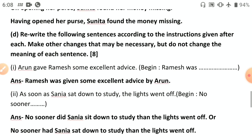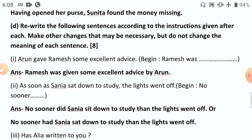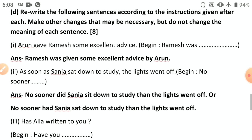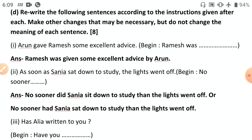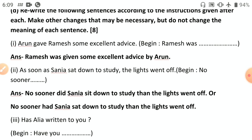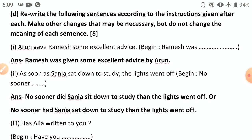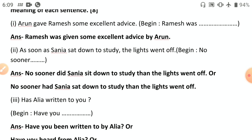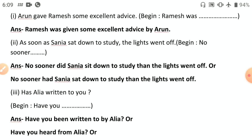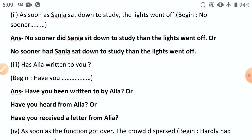Now transformation of sentences. First: 'Arun gave Ramesh some excellent advice' — begin with 'Ramesh was': active to passive: 'Ramesh was given some excellent advice by Arun.' Second: 'As soon as Sanya sat down to study, the lights went off' — begin with 'no sooner': 'No sooner did Sanya sit down to study than the lights went off.' Or: 'No sooner had Sanya sat down to study than the lights went off.'